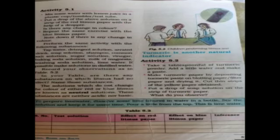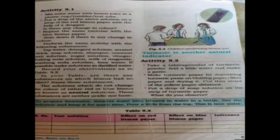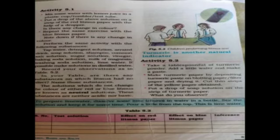Now page number 51. Some substances are acids and some are bases, but what about substances which are neither? The solutions which do not change the color of either red or blue litmus are known as neutral solutions. Acid turns blue litmus paper red and base turns red litmus paper blue, but neutral substances do not change either color. These substances are neither acidic nor basic.